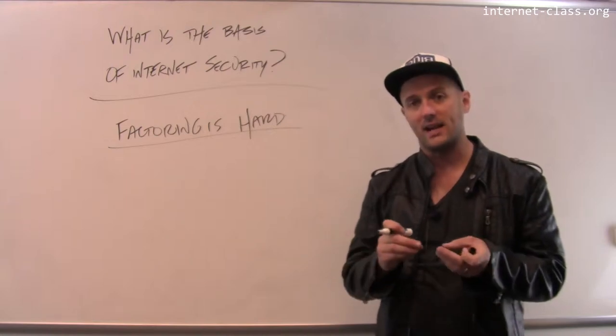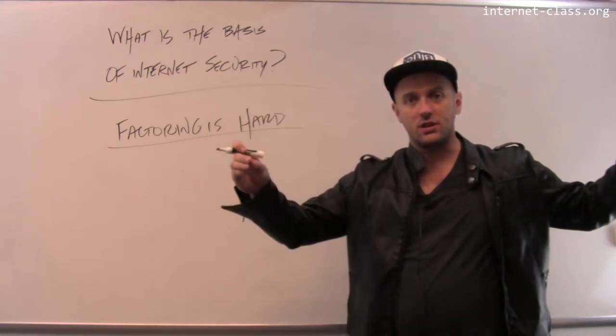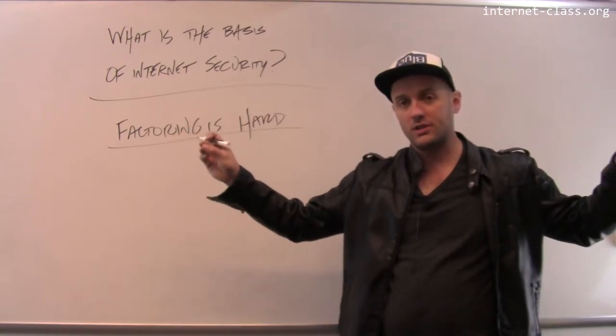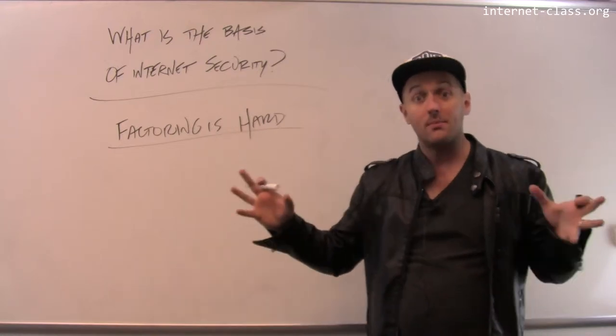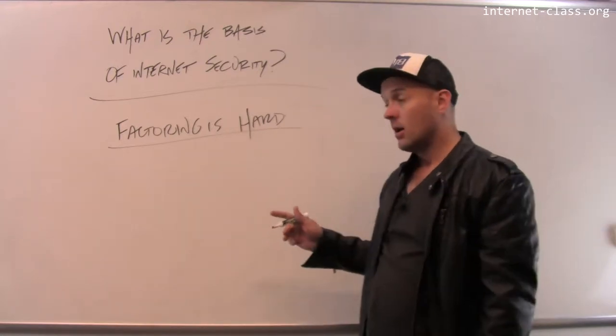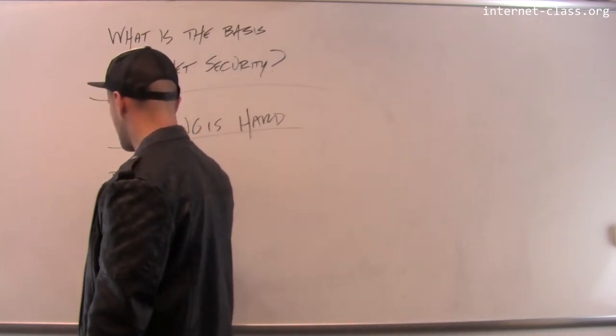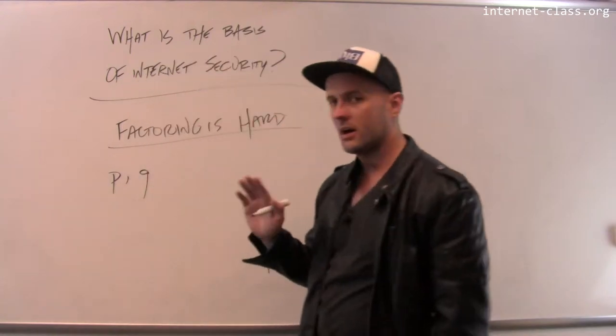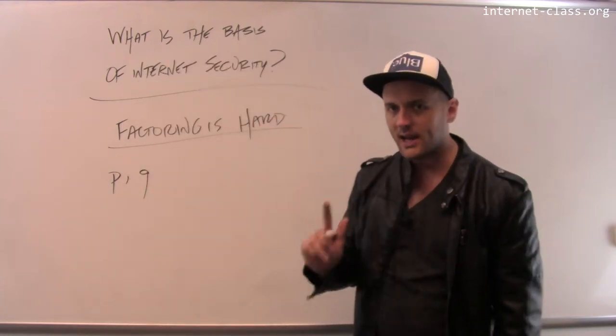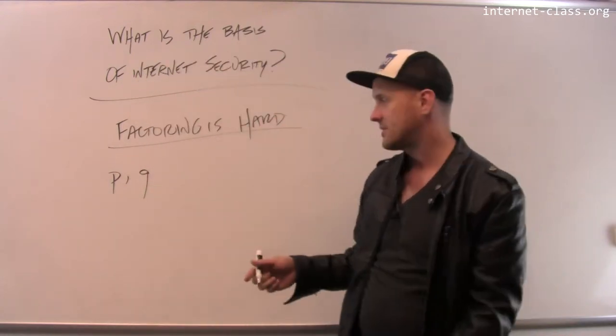It's actually really fascinating. When you get out into these huge numbers, there are still a lot of prime numbers out there. So what we can do is take two large prime numbers. Let's call them p and q. If you give me two large prime numbers, it is very easy to multiply them together.